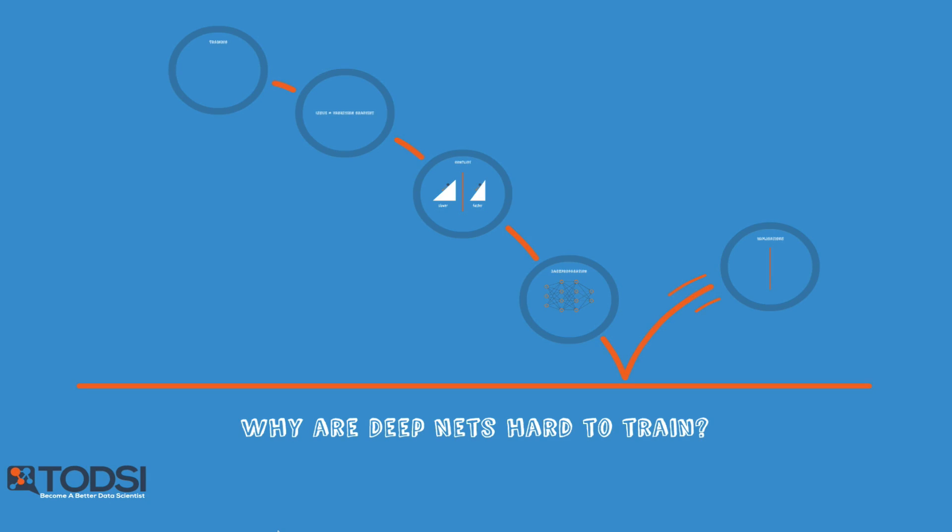So now you're probably thinking, wow, deep nets are really great. But why did it take so long for them to become popular? Well, as it turns out, when you try to train them with a method called backpropagation,